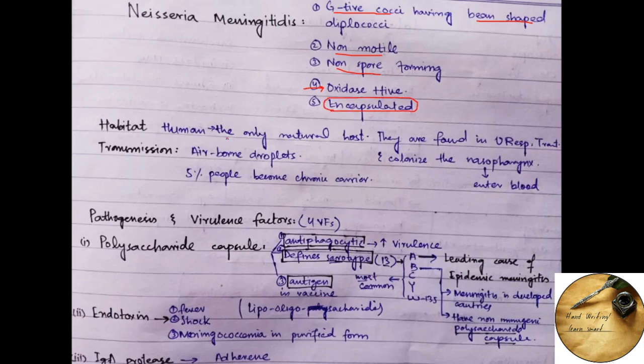I am coming towards the habitat of Neisseria meningitidis. So humans are the only natural host of Neisseria meningitidis. In humans they are found in the upper respiratory tract and colonize the nasal pharynx from where it can enter the blood.